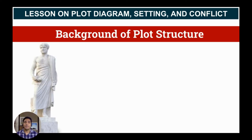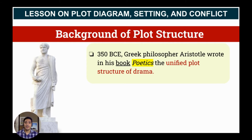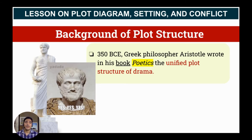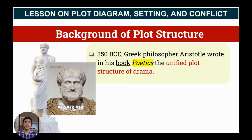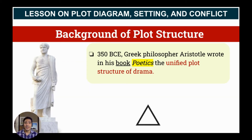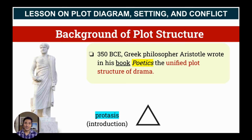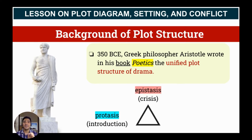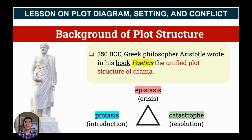Let's have a short background of plot structure. In 350 BCE, Greek philosopher Aristotle wrote in his book Poetics the unified plot structure of drama. According to him, we can picture out the story in just a triangle. In the lower left, we call that protesis, or the introduction. The pointy part, we call that epistesis, or crisis. And the lower right, we call that catastrophe, or the resolution.